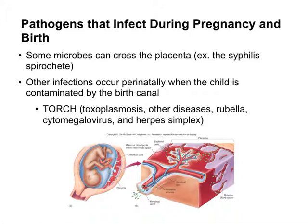There's a nice acronym called TORCH, which helps health professionals consider all of the different possibilities. TORCH stands for toxoplasmosis, other diseases (including Hepatitis B, AIDS, chlamydia), rubella, cytomegalovirus, and the herpesviruses. Each of these TORCH pathogens can easily infect a fetus as it passes through the birth canal. Any of these infections in the mother can result in early termination of pregnancy, premature birth, and even death in some cases. So it's very important for a mother to be tested for each of these TORCH diseases during her pregnancy.